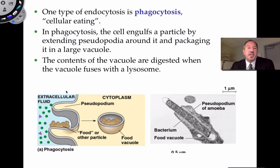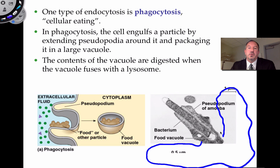When a cell is taking in something large from the outside, an older term sometimes still used is phagocytosis — a Greek word meaning cellular eating. When the cell extends its plasma membrane like that, it forms pseudopodia, meaning false feet. This is a transmission electron micrograph of the pseudopodia of an amoeba trying to engulf bacteria — it's really stretching its membrane out to take in something very large like a bacterium.